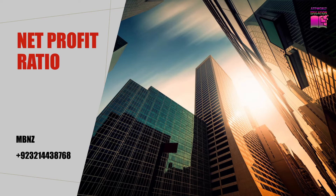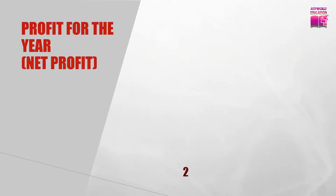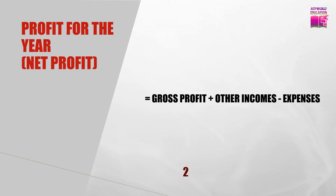We start from net profit or profit for the year. Profit for the year is calculated by subtracting expenses from gross profit and adding other incomes to the gross profit. The formula is: gross profit plus other incomes, then subtract expenses.